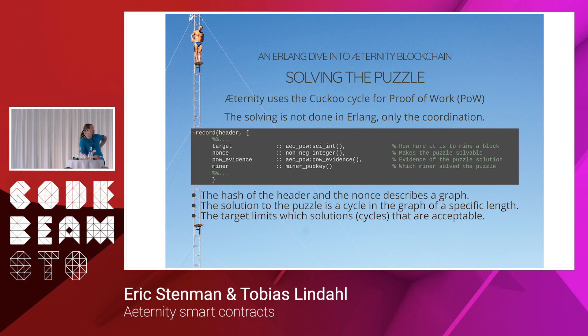However, we don't accept any solution — this is determined by the target. The target limits which solutions are acceptable on the blockchain. The target is the variable that adjusts how often a new block can be produced. If you have a lot of miners solving this problem, you need to change the target so that the problem gets more difficult to solve. It's self-adjusting: you look at a couple of headers back and change the target accordingly, according to a set specification.